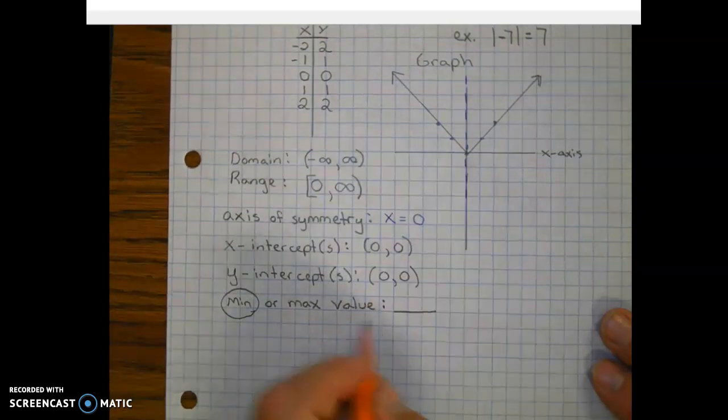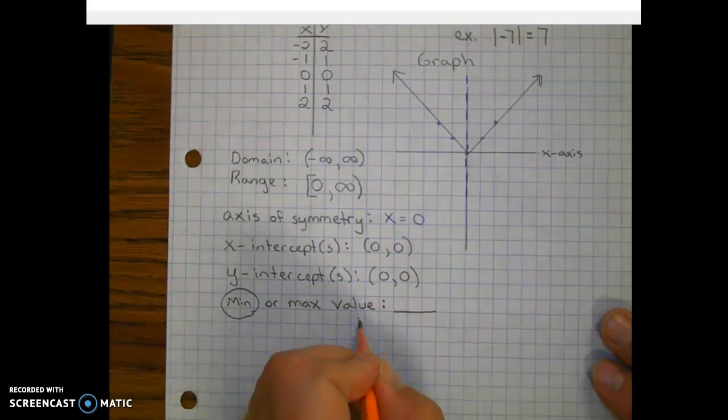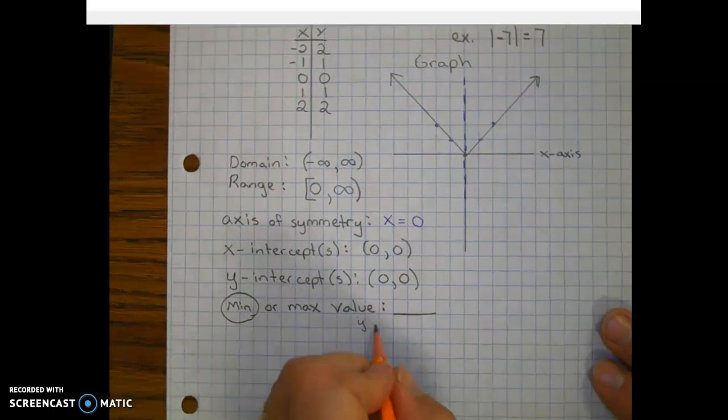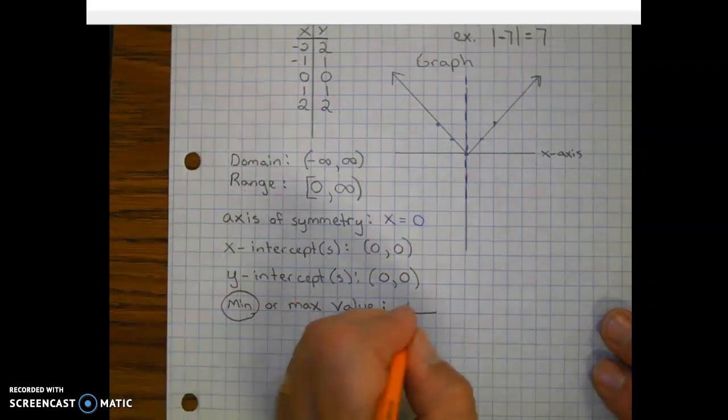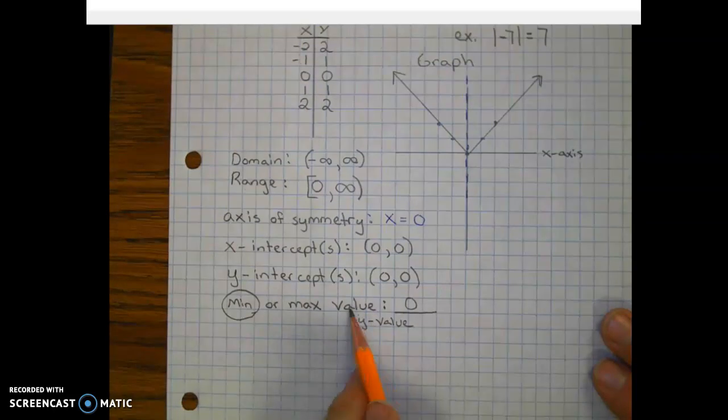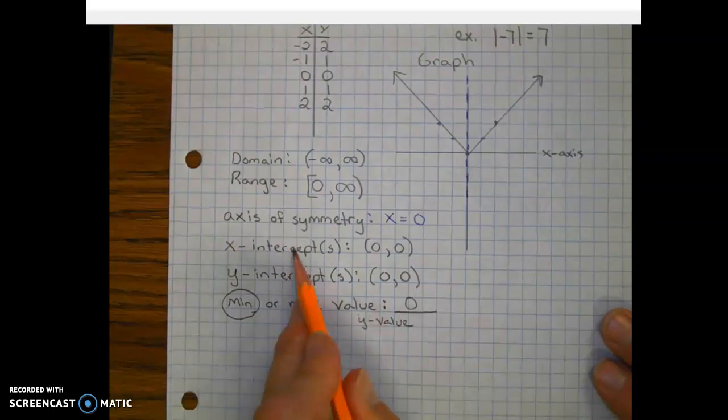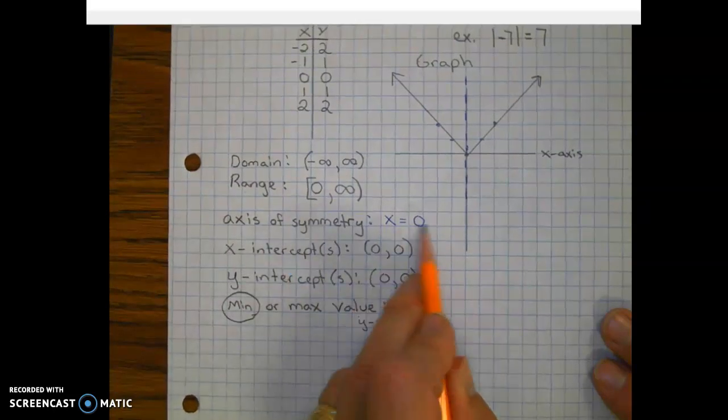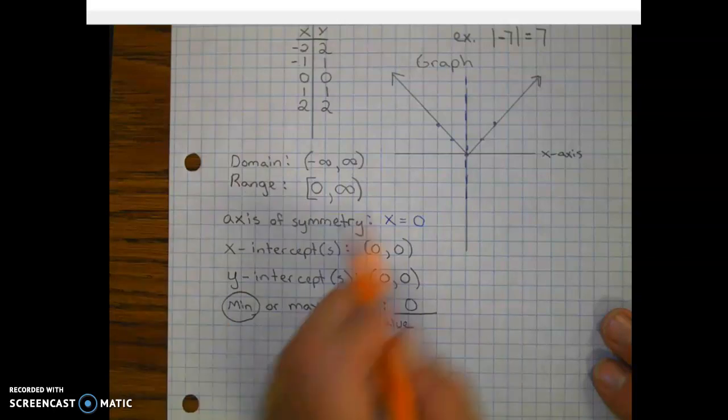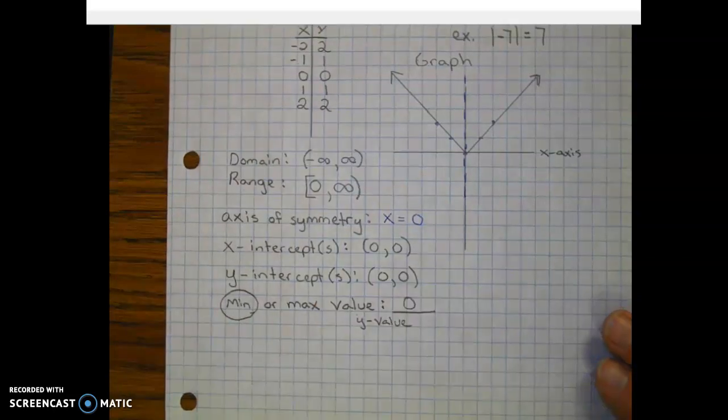And the value, remember, is the y value of that point. So the y value of this point is zero. Now notice, I'm looking for a value. So it's just a number. Whereas intercepts are points, and axis of symmetry is a line. And here's domain and range.